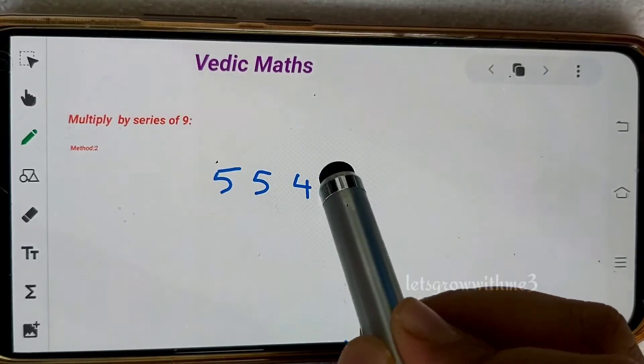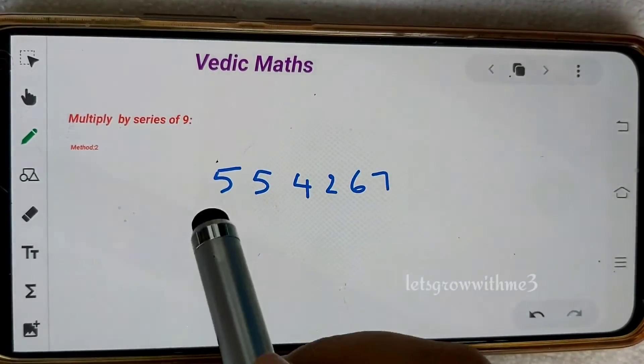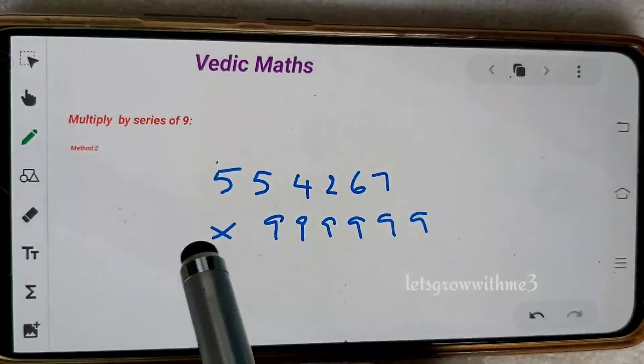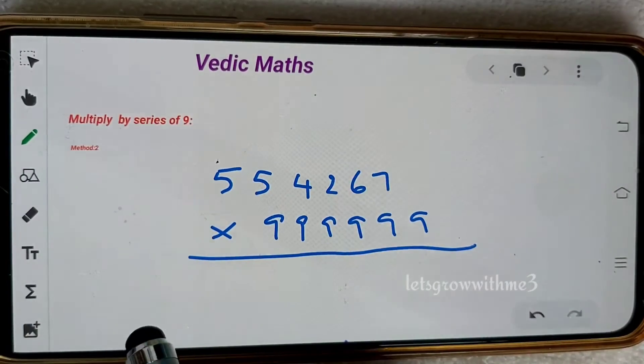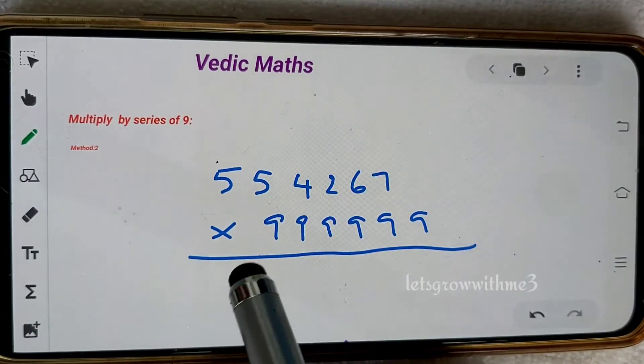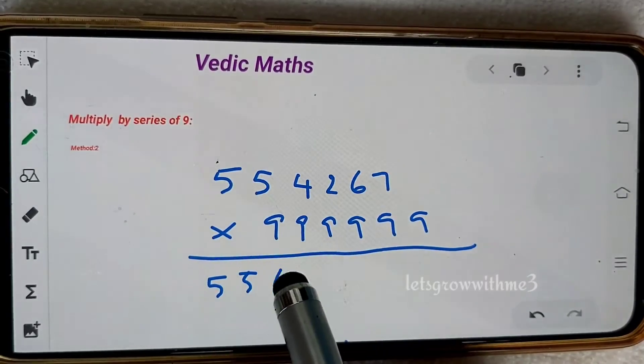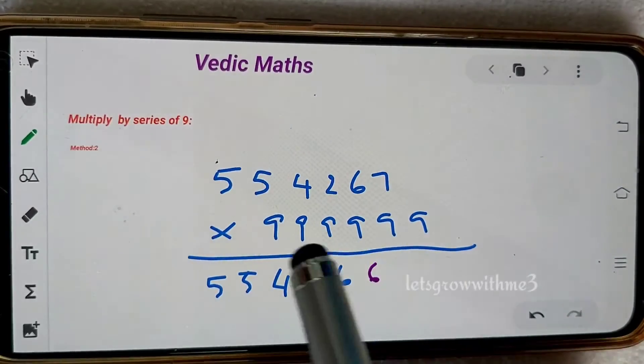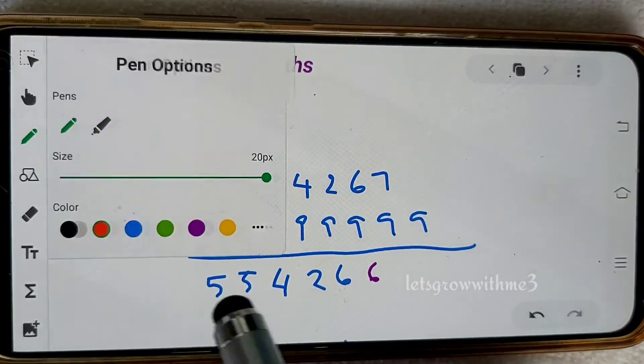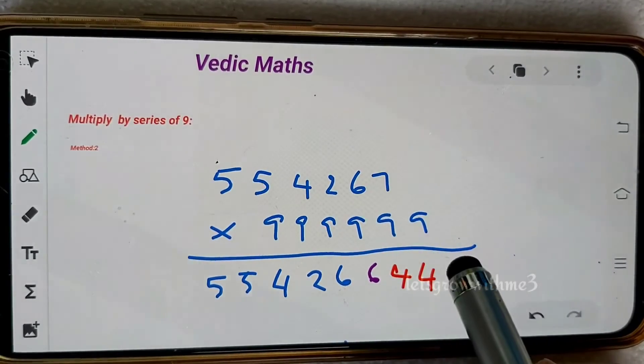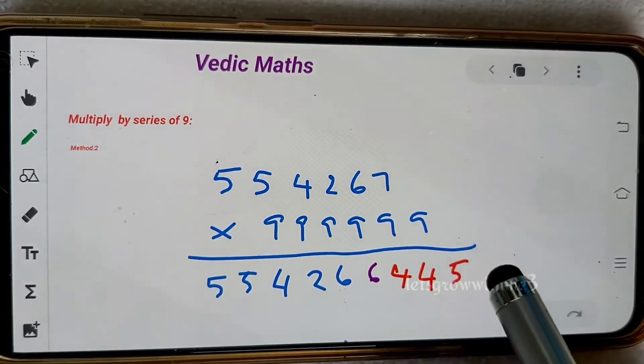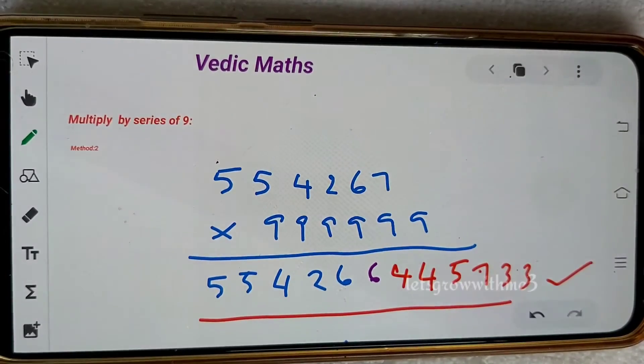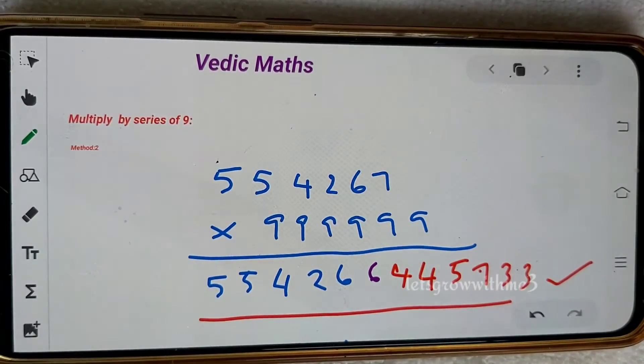555542679 times 999999. How many digits are there? Six. So write six 9s. Now the answer: 555426, just we need to decrement one value. I want to change the color. Next I just add the complement values: 4, 4, 5, 7, 3, 3. That's our answer. Hardly it will take 5 to 10 seconds, so easy.